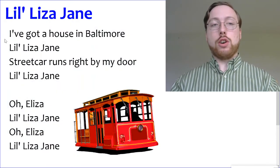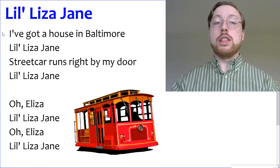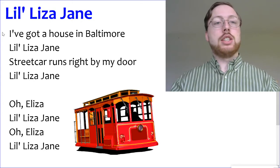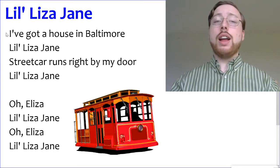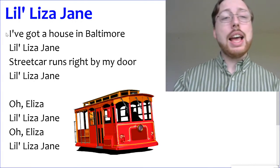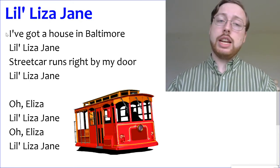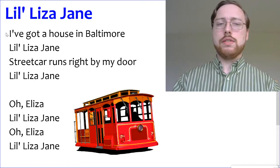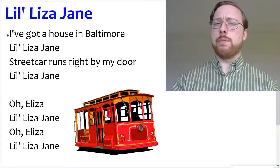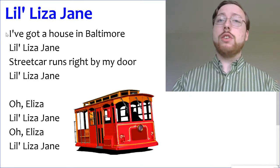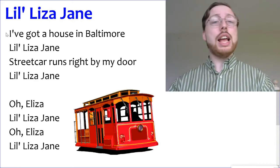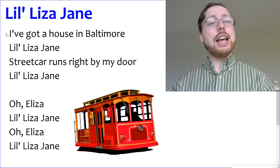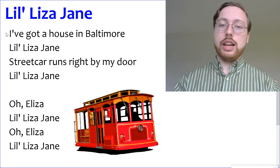Let's try singing the whole song. The first time I'm going to sing with you, and then the second time I'm just going to hum so you'll have to do all the words by yourself. Let's sing together — ready, one, two, ready go. I've got a house in Baltimore, Lil Eliza Jane. Streetcar runs right by my door, Lil Eliza Jane. Oh Eliza, Lil Eliza Jane. Oh Eliza, Lil Eliza Jane. Let's do that one more time before I just hum, from the beginning — ready go. I've got a house in Baltimore, Lil Eliza Jane. Streetcar runs right by my door, Lil Eliza Jane. Oh Eliza, Lil Eliza Jane. Oh Eliza, Lil Eliza Jane. How'd you do?